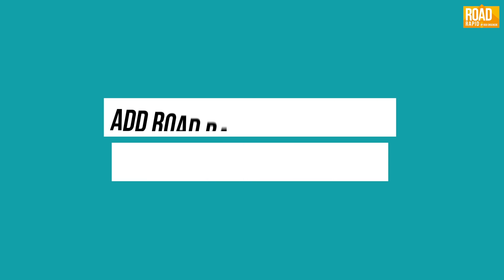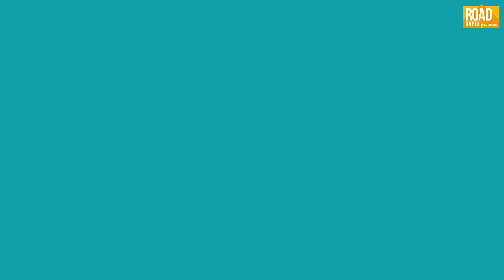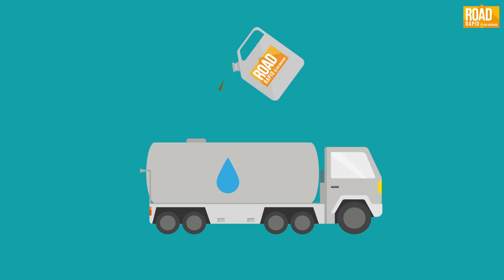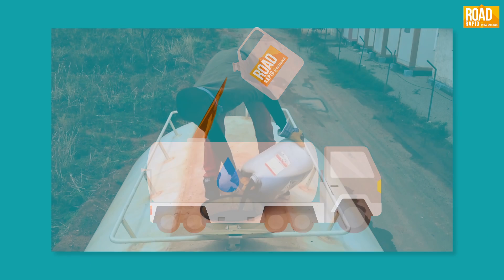The Road Rapid solution is added to regular water using only 6 drops per kilogram of soil, and sprayed evenly over the road surface.